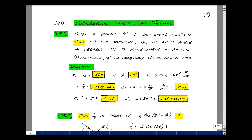Given a voltage V equal to 50 cosine of 200 pi T plus 60 degrees. Could you find the amplitude, the phase angle in degrees, the phase angle in radians, the period, the frequency in Hertz, and the frequency in radians per second?